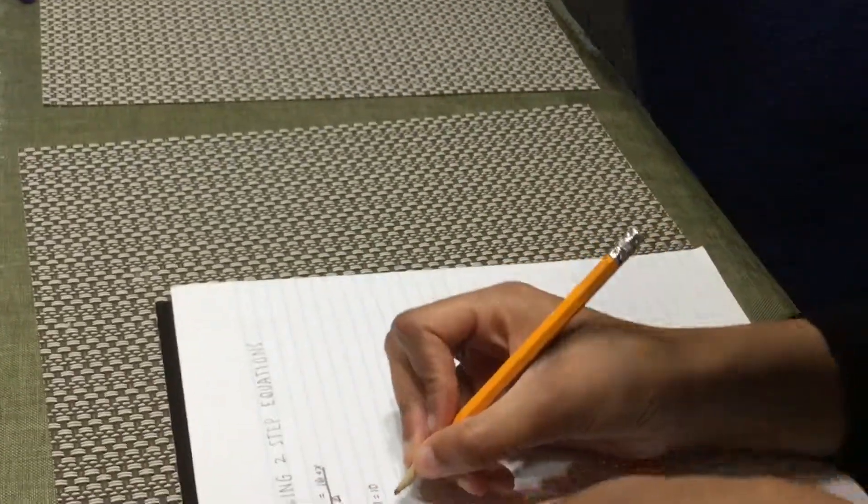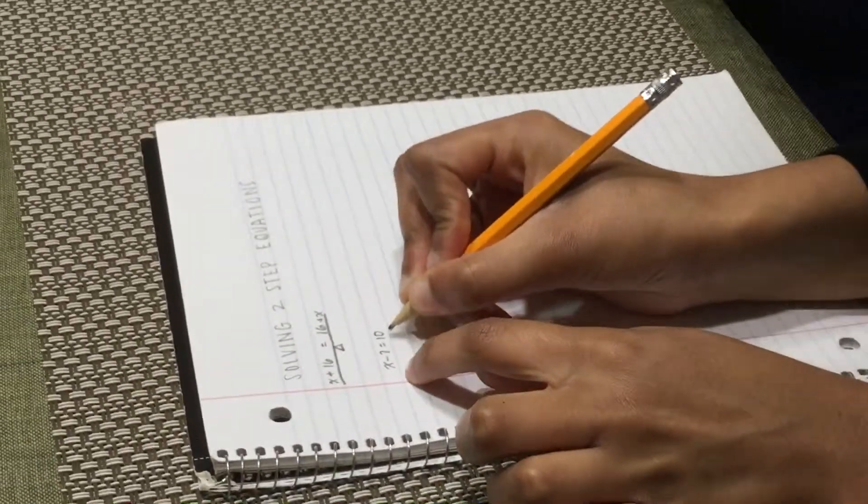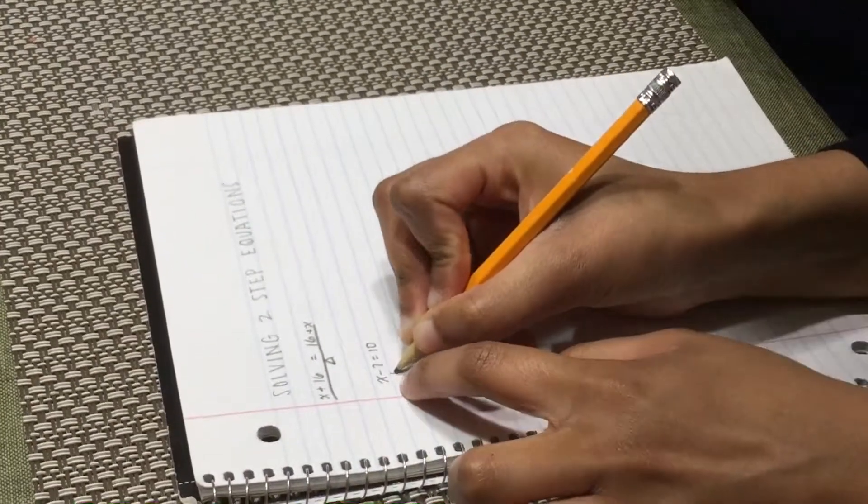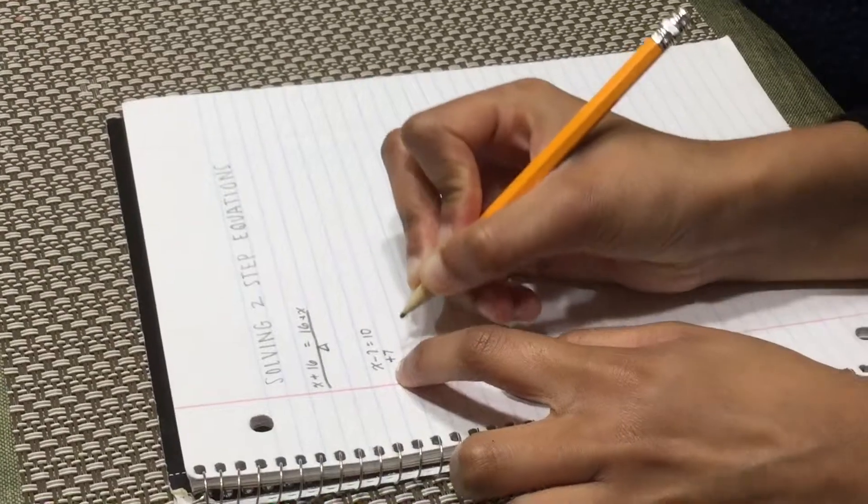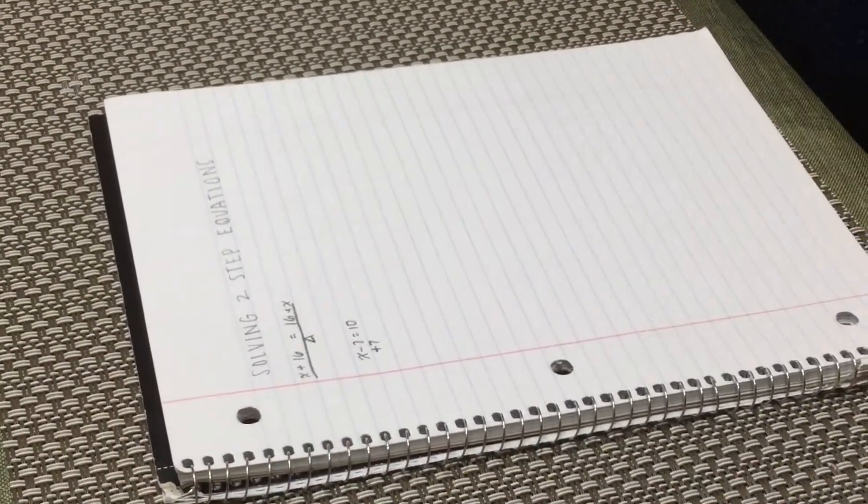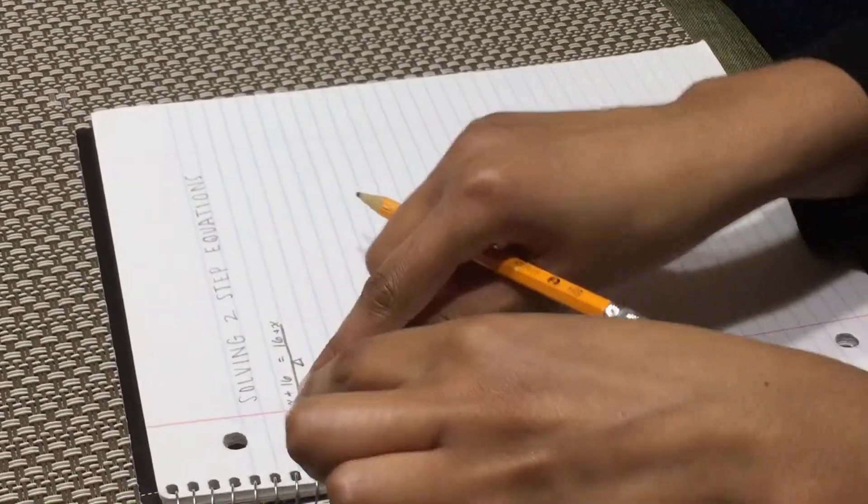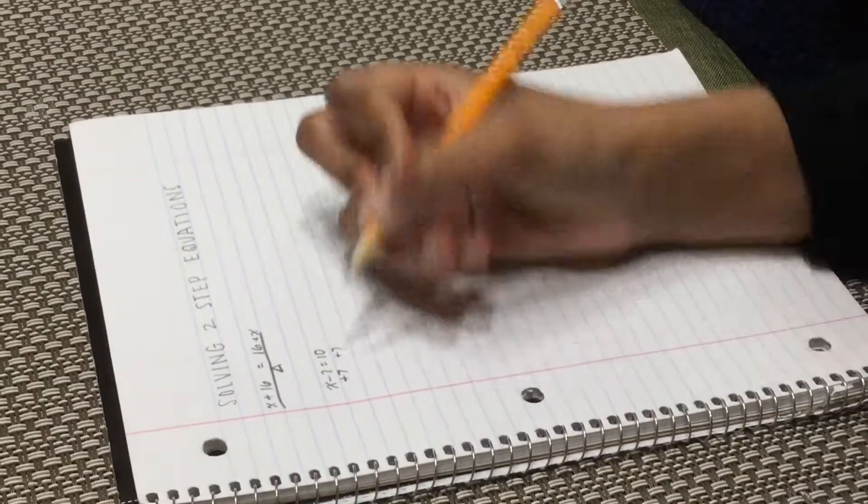So let me see. So I have x minus 7 is equal to 10, right? So I have to add 7 to remove that 7, to take it away. So here we have a negative 7, so I have to add 7 to bring it to 0. But what I do to one side, I have to do it to the other side. To keep the balance?